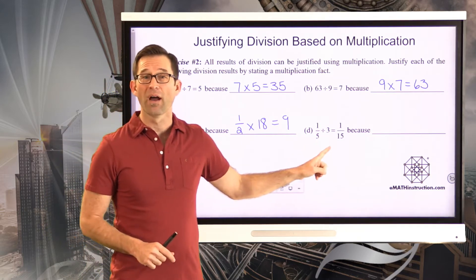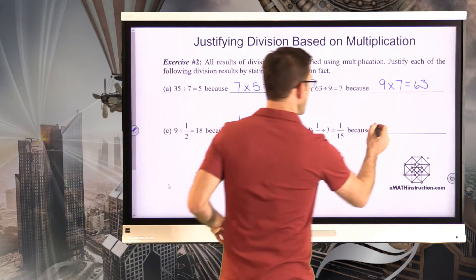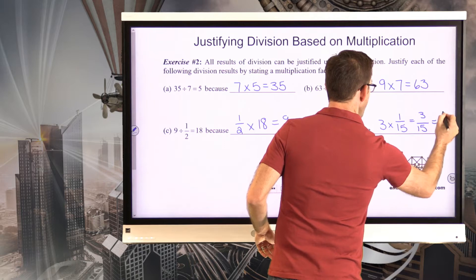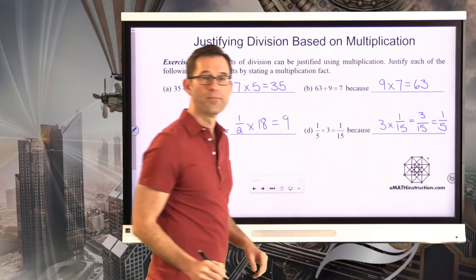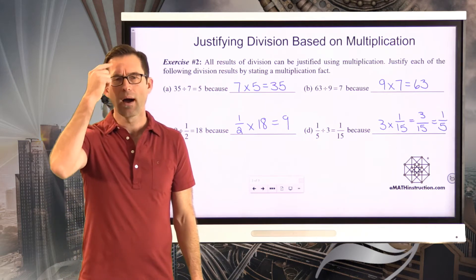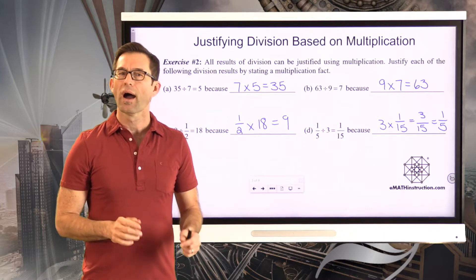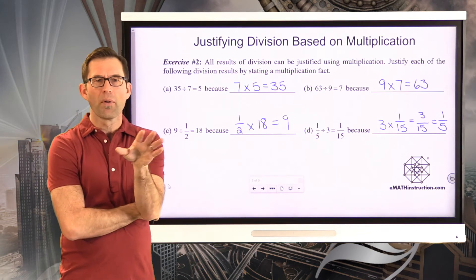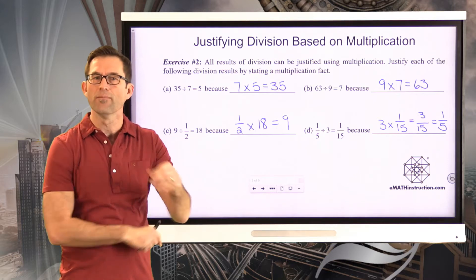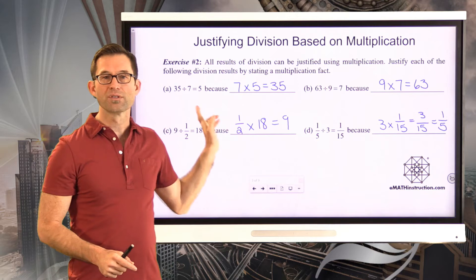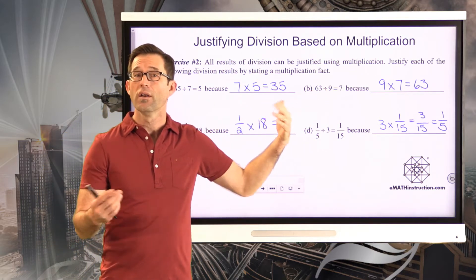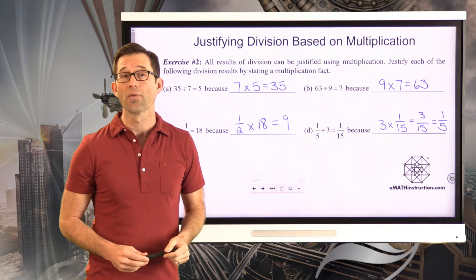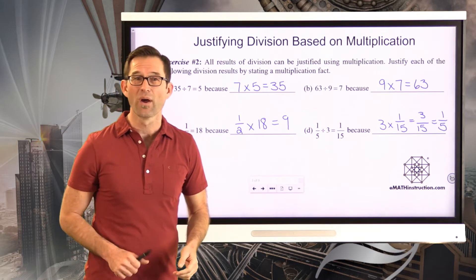Anytime I want to think about the result of a division problem, I should think: what would I multiply the divisor by to get the dividend? For instance, what is 9 divided by one-half? What would I multiply one-half by to get 9? I'd have to multiply it by 18. So 9 divided by one-half must be 18. These problems with positive whole numbers are fairly easy, but in the next exercise we're going to think about what happens when we divide by negatives.